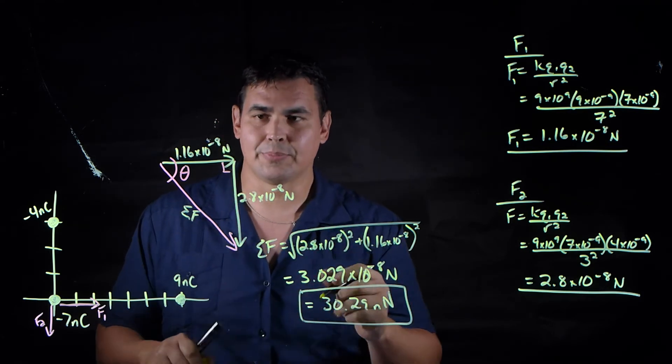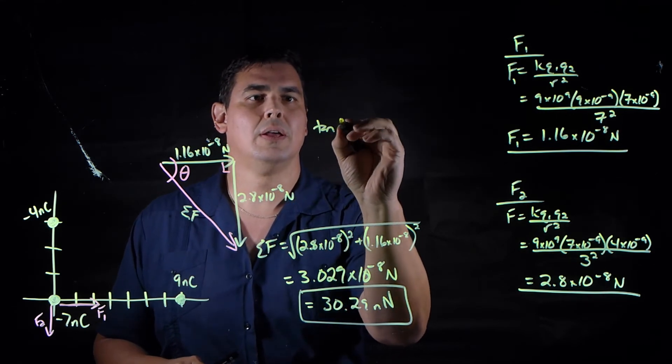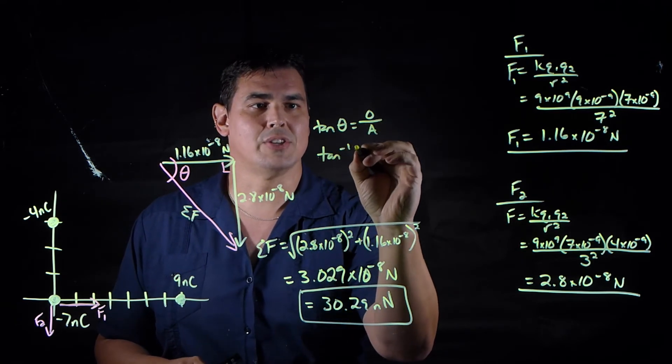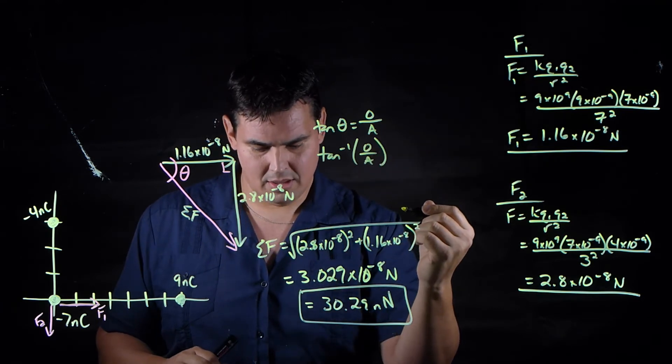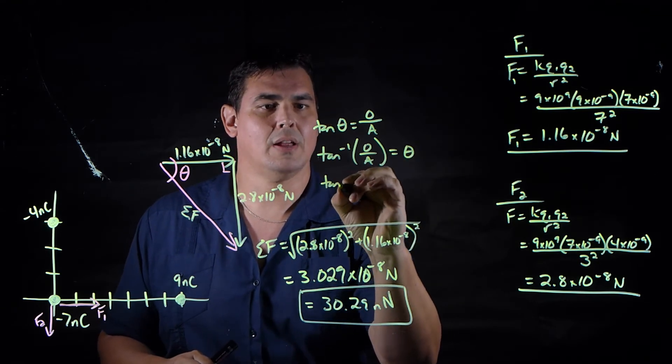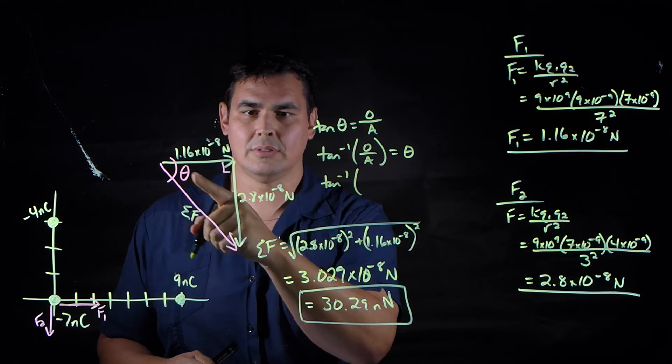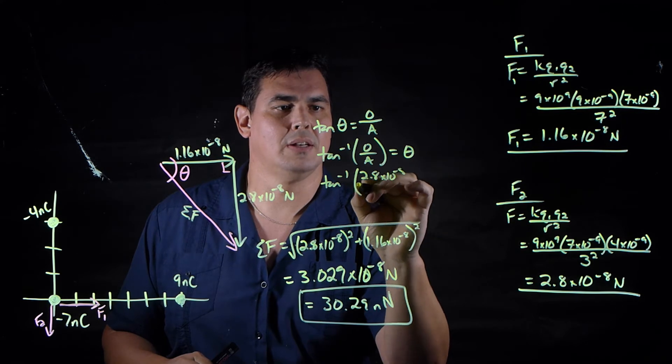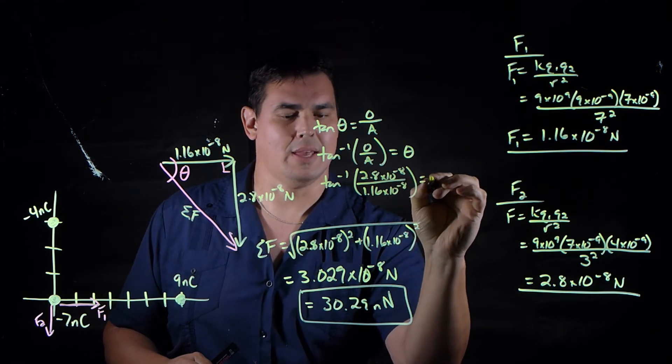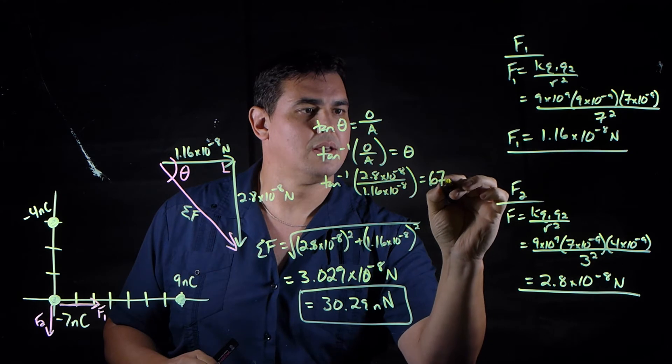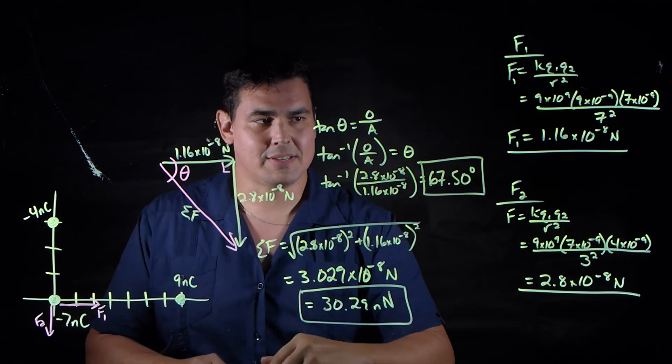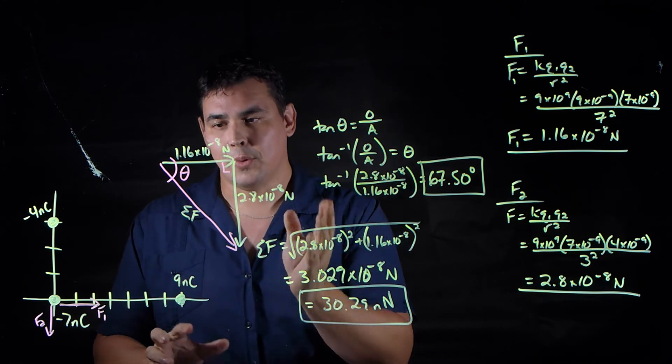I'll use tangent theta equals the opposite side over the adjacent side. So if I take the arc tangent of the opposite over the adjacent side, that's going to give you the angle. If I take the arc tangent of 2.8 times 10 to the minus 8 over 1.16 times 10 to the minus 8, I get 67.50 degrees. So this angle is 67.50 degrees.